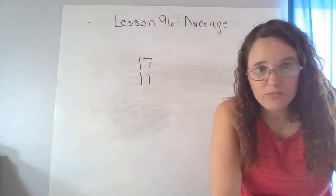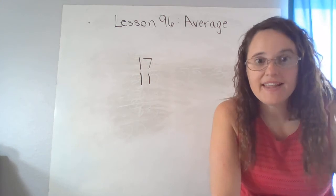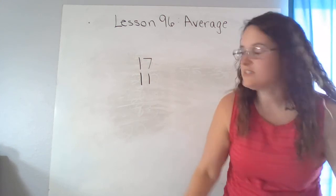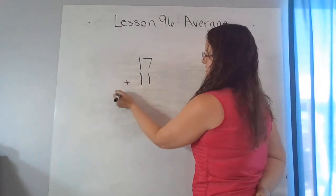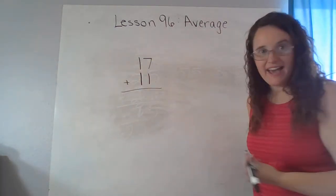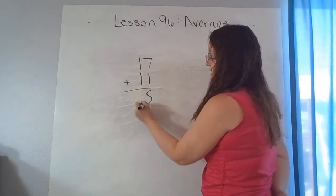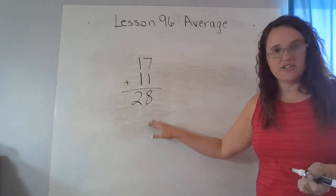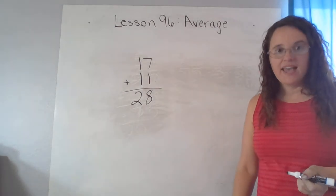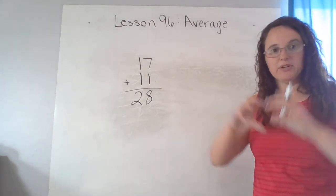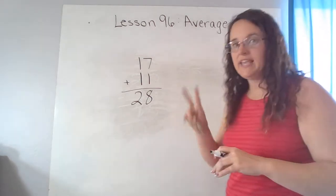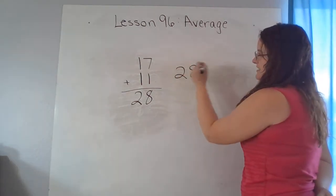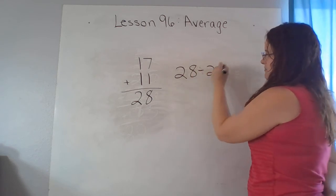They never say the word average, but an average is what they want you to find. They want you to take the total number of books. So we find that by adding our two numbers, 7 plus 1, 1 plus 1. So Allison has a total of 28 books and then she takes those 28 books and splits them into two equal stacks. So then we need to do 28 divided by 2.